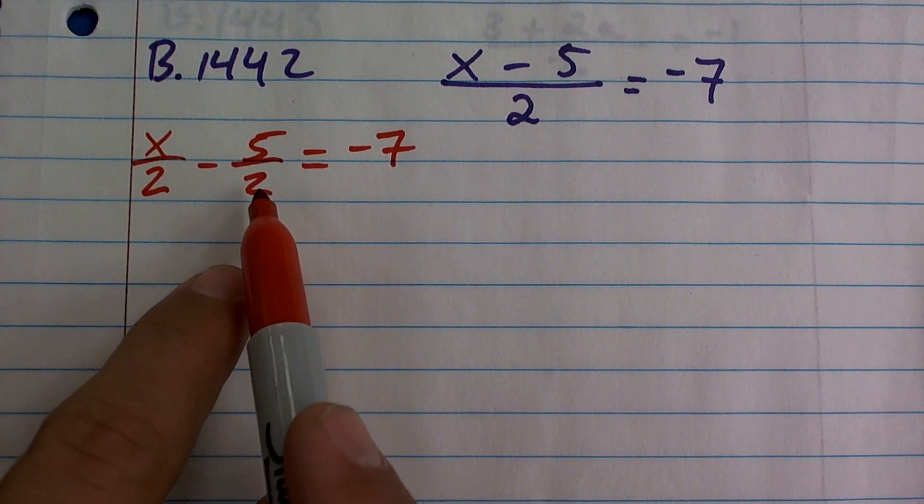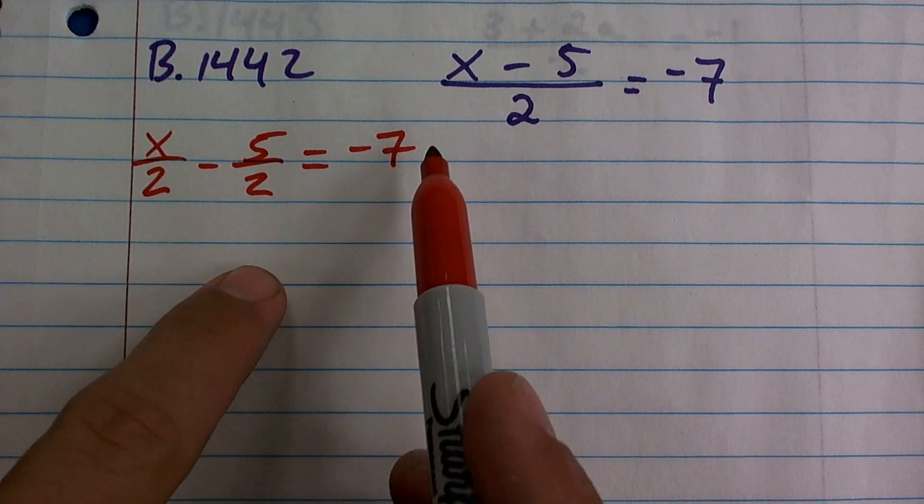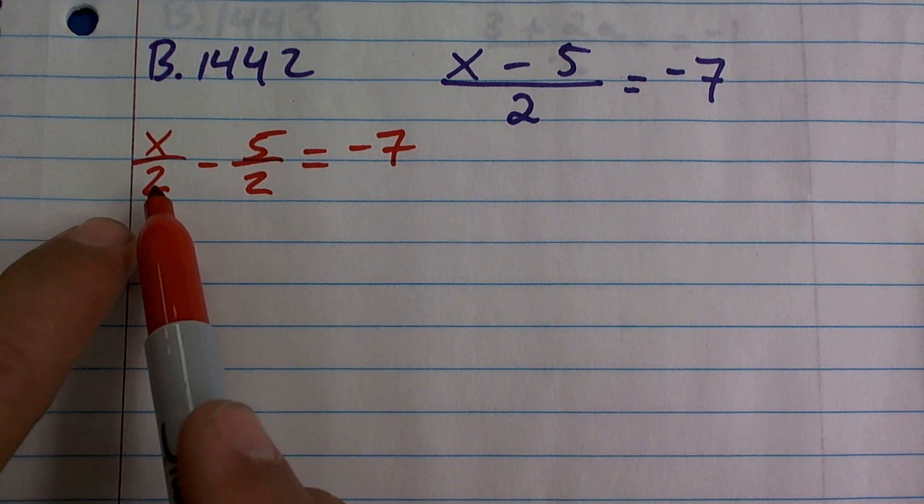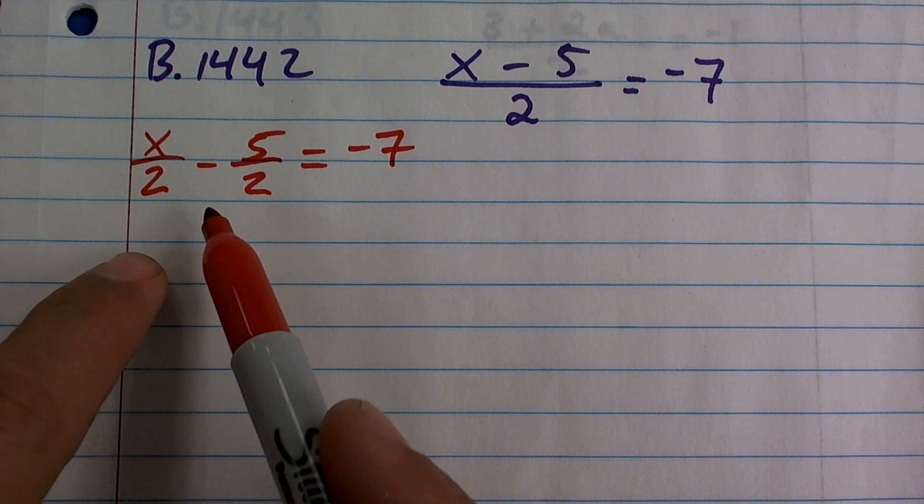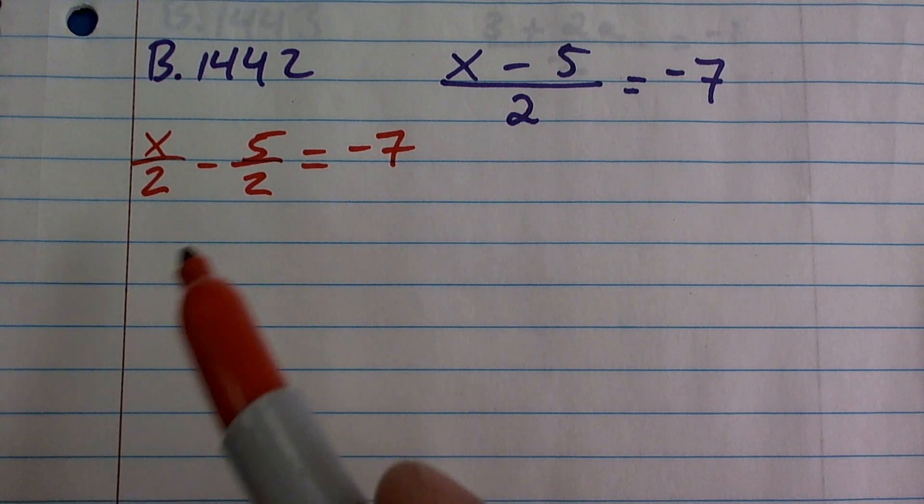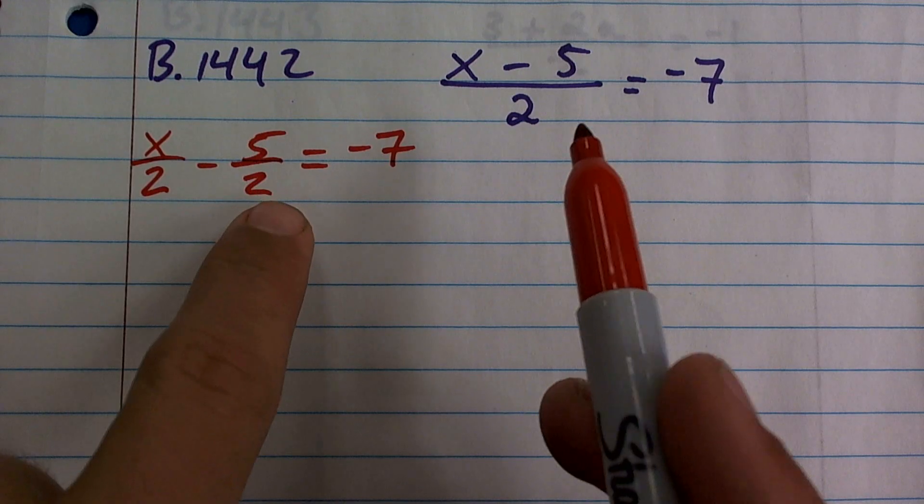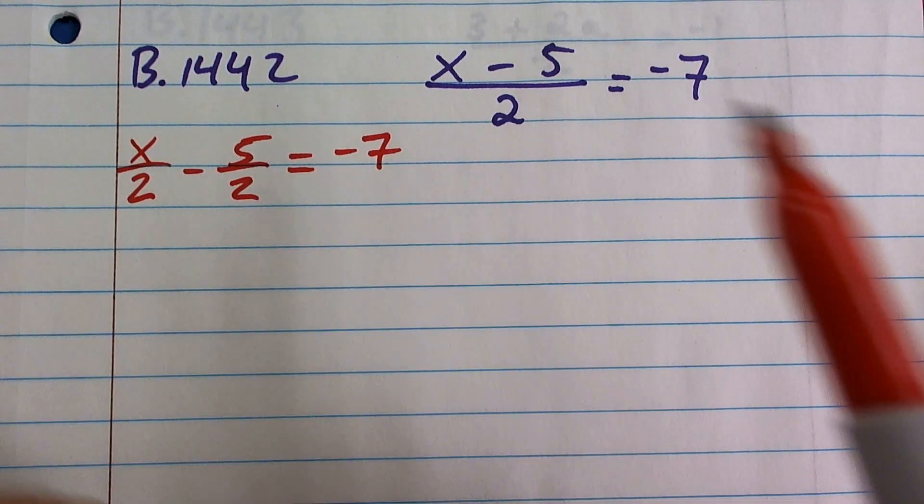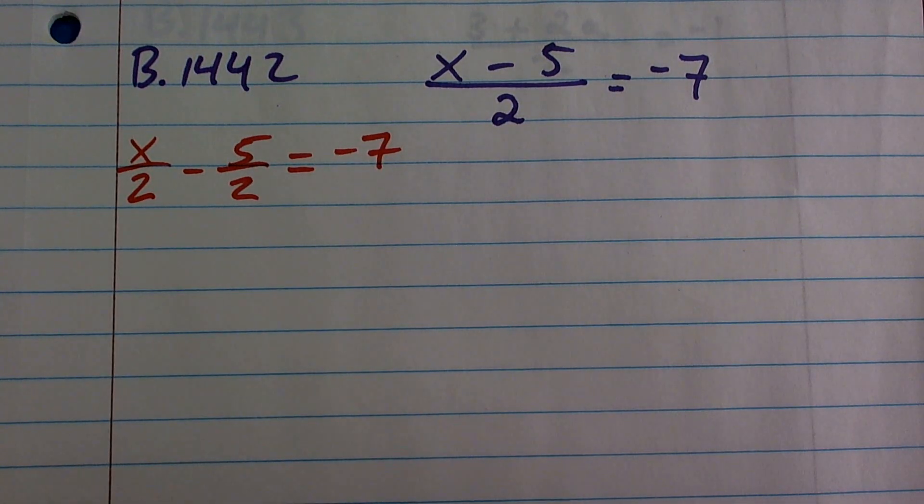Now, here, you could use your inverse operations. You could add five halves to both sides and then multiply by two to get your variable by itself. However, that's kind of a different way. The main thing we can do is, remember when I was talking about fractions? I said, get rid of the fractions.